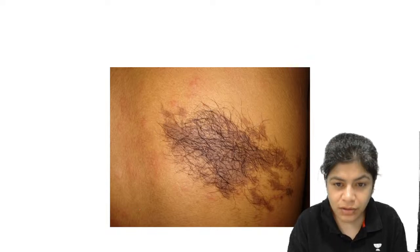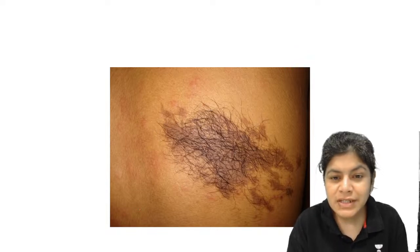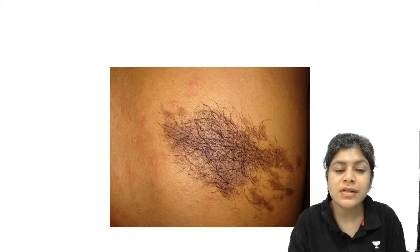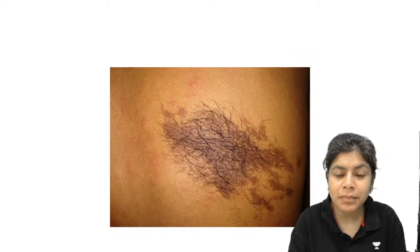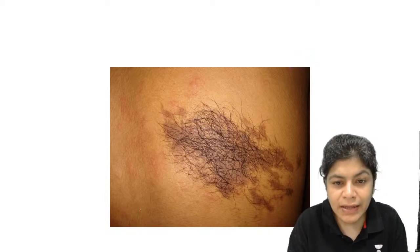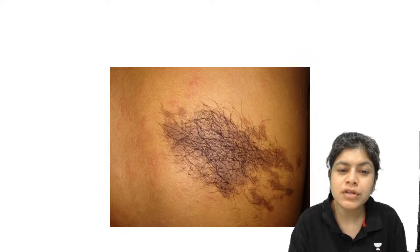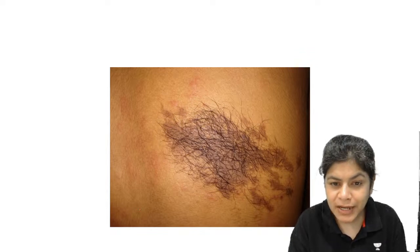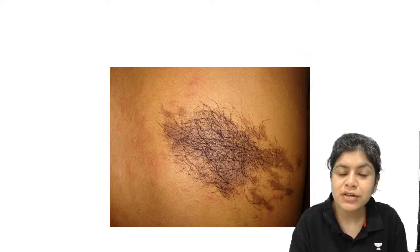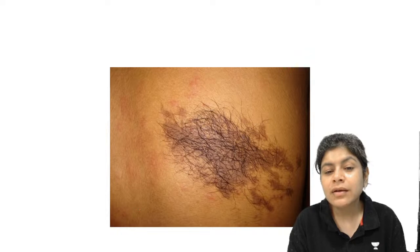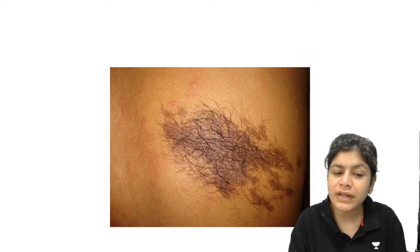Becker's nevus presents sometime in adolescence, around puberty, starting off as a brownish-colored patch — not black. Why brown? Because Becker's nevus is an epidermal melanocytic nevus. Under the influence of hormones at puberty, the patient starts developing hair over the patch as well as acne-form eruptions. The patch is very sensitive to underlying androgens, leading to thick terminal hair and acne.